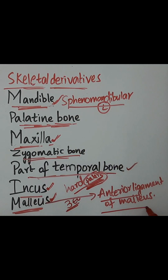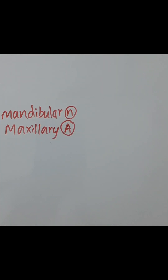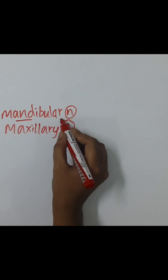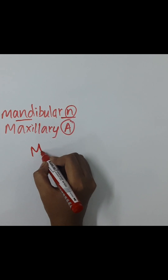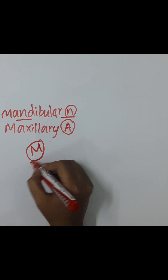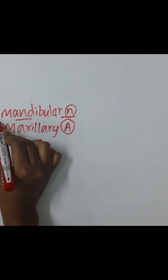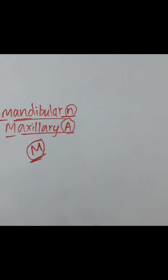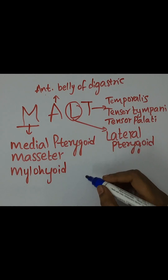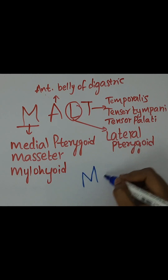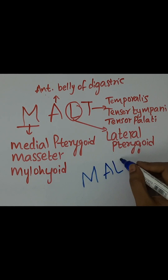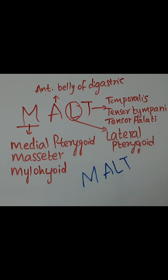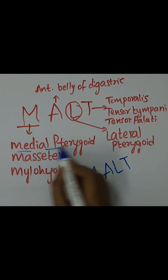The nerve and artery of the 1st pharyngeal arch — remember the letter M for the mandibular arch. The nerve is the mandibular nerve and the artery is the maxillary artery. For the muscles of the 1st pharyngeal arch, remember the mnemonic MALT. The muscles of mastication are derived from the 1st pharyngeal arch and include medial pterygoid.